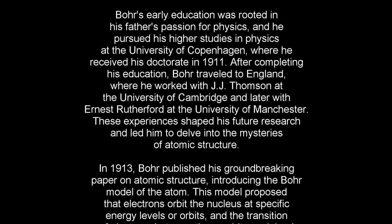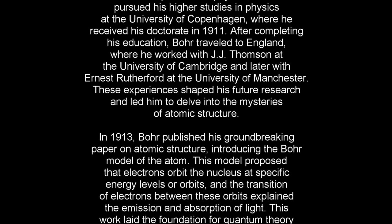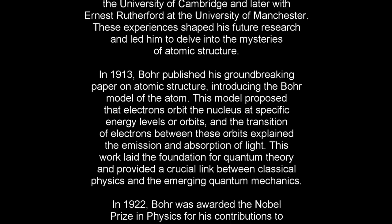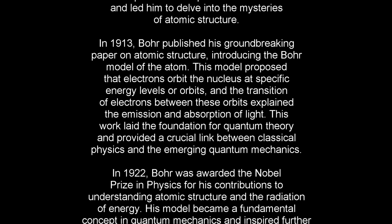These experiences shaped his future research and led him to delve into the mysteries of atomic structure. In 1913, Bohr published his groundbreaking paper on atomic structure, introducing the Bohr model of the atom. This model proposed that electrons orbit the nucleus at specific energy levels, and the transition of electrons between these orbits explained the emission and absorption of light.